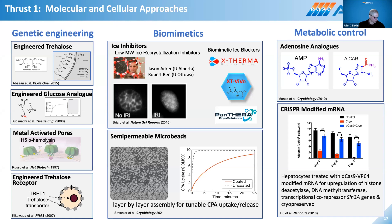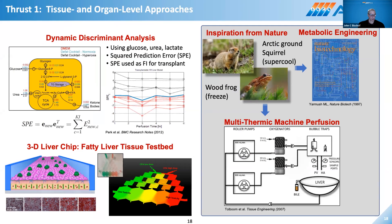We also do biomimetics — taking from nature-inspired cases like the Antarctic cod, using computational chemistry to create recrystallization inhibitors that reduce recrystallization inside cells and keep them alive in the presence of ice. Semi-permeable microbeads can deliver and remove cryoprotective agents during and after phase change events. Dynamic discriminant analysis and a liver chip test bed are used to study cryoprotective agent toxicity, showing low and high toxicity depending on how the agent is presented. The Arctic ground squirrel can super-cool dramatically and still survive — we create technologies to recapitulate that, as well as multi-thermic machine perfusion to mimic what the wood frog liver undergoes.